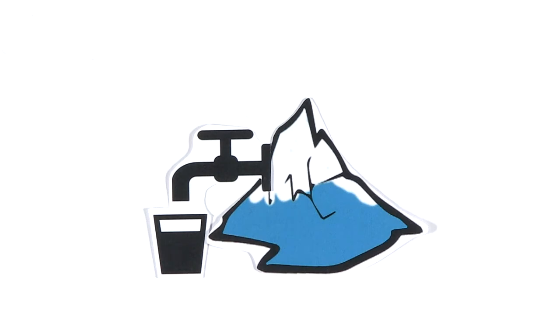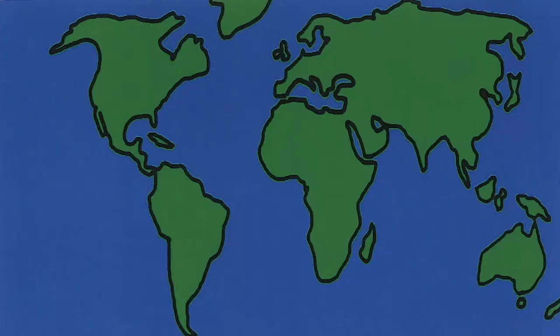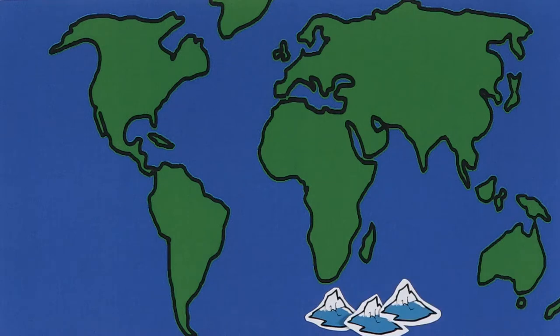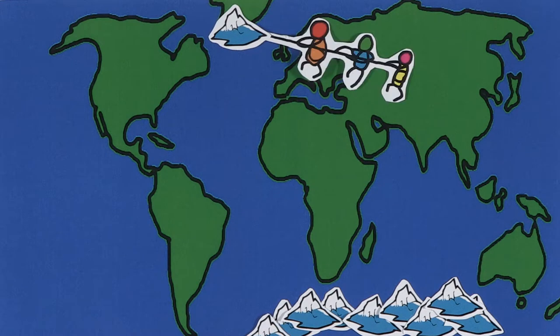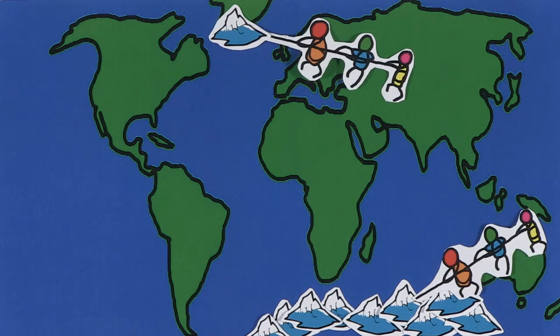Most of the fresh water on Earth is stored in glaciers and ice sheets. Around 90% of the glaciers are concentrated in Antarctica and the other 10% are in the Arctic, more specifically in Greenland. However, it is hard to drag an iceberg to more habitable places.